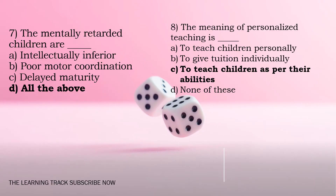Next question: The mentally retarded children are dash. The options are intellectually inferior, poor motor coordination, delayed maturity. All of these characteristics are related to mentally retarded children.